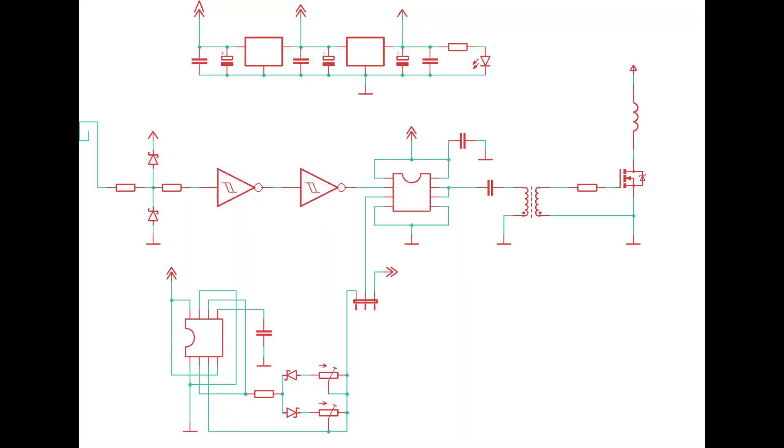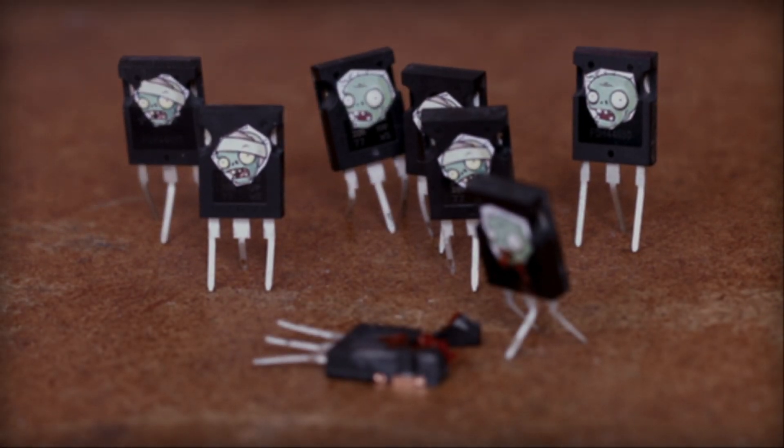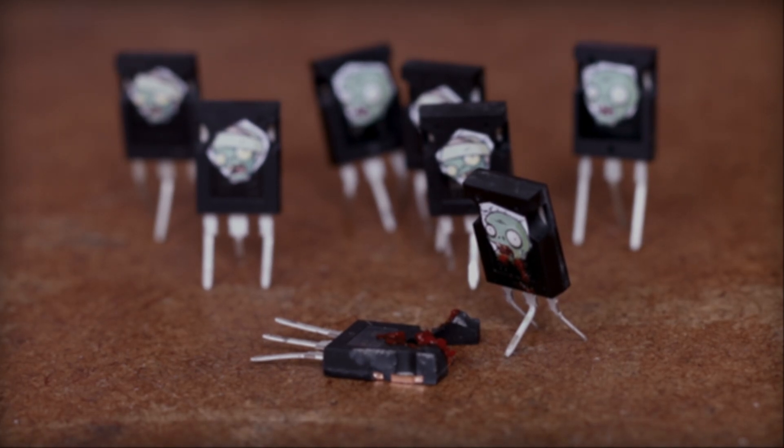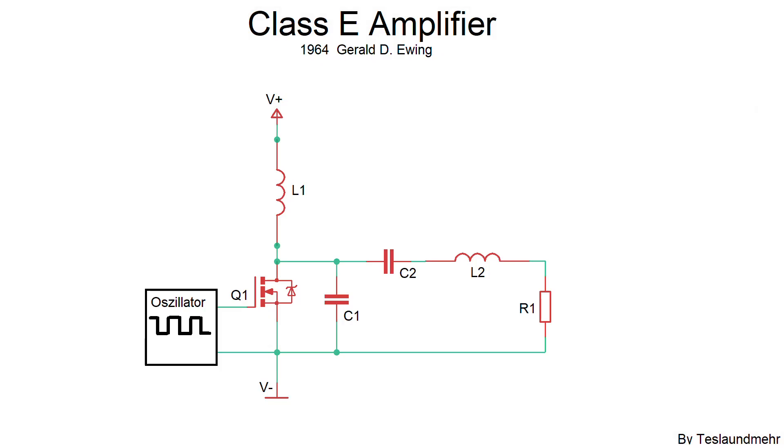But I can tell you one thing. If we do everything as usual – feedback oscillator, GDT driver and just a MOSFET in the end to amplify the signal – your MOSFETs will die faster than you can look. Ask the colleagues here. But there's a good solution thanks to an absolutely smart guy named Gerald D. Ewing. The class E amplifier.